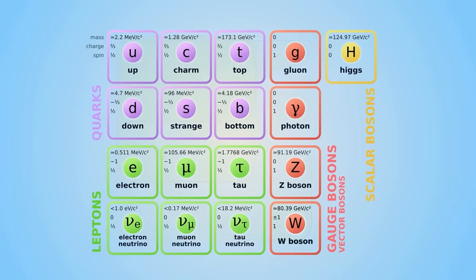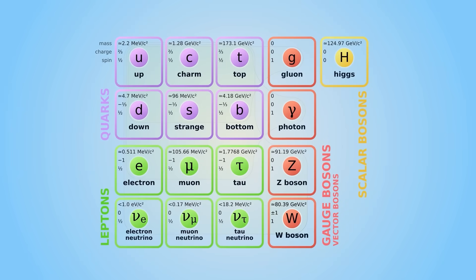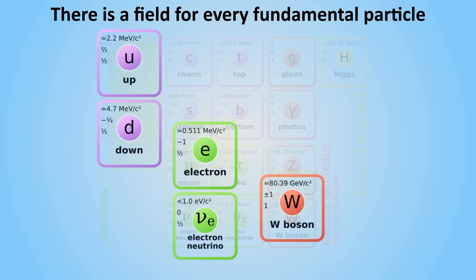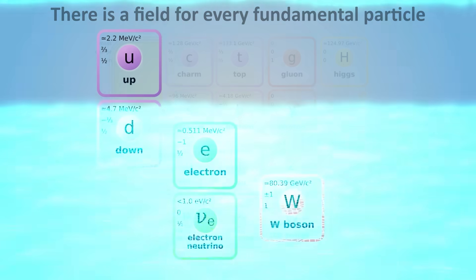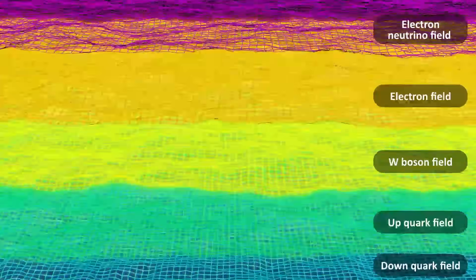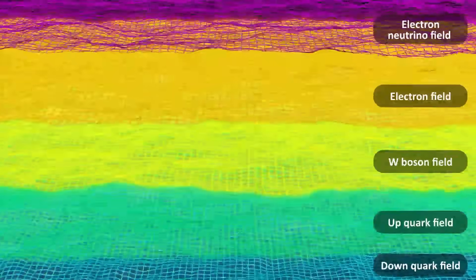There is a field for every particle of the standard model. So in our beta decay example, there would be a field for the down quark, the W boson, the up quark, the electron, and the anti-neutrino. All these fields extend out in all of spacetime. In other words, the fields are always there and exist everywhere, including inside your body.